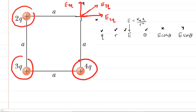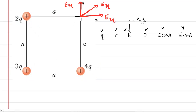It's always important to draw in your electric fields before filling in the chart. Now we fill in all the charges: 2Q, 4Q, and 3Q. The next column is R — the distance from each charge to the location of interest. The distance from 2Q to that location is A, and the distance from 4Q to that location is also A.